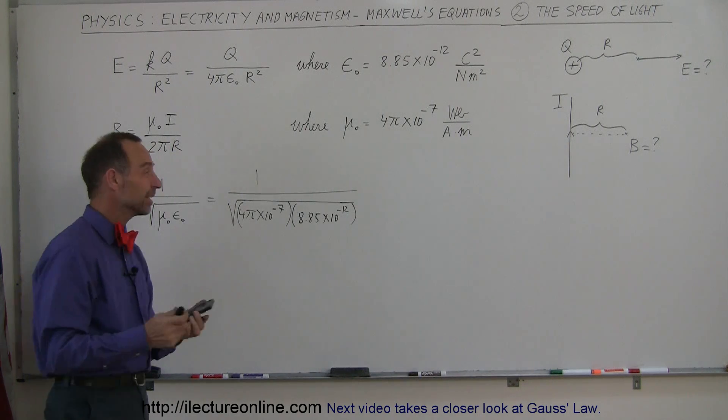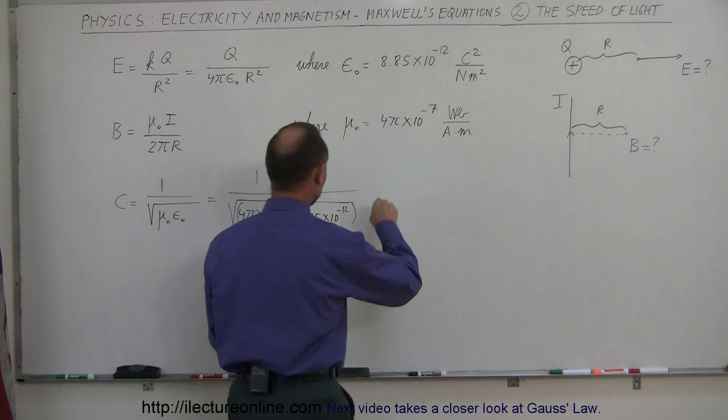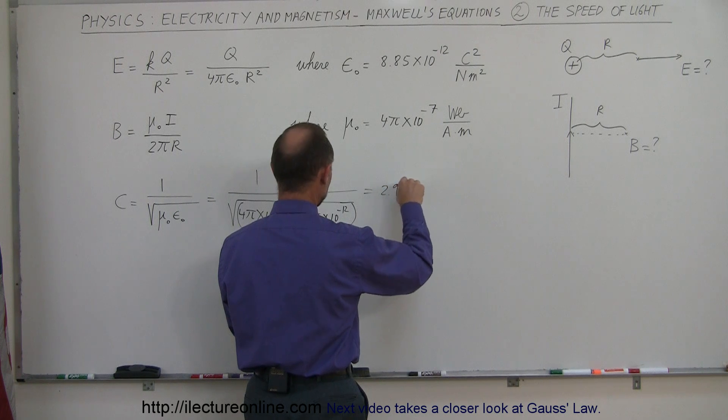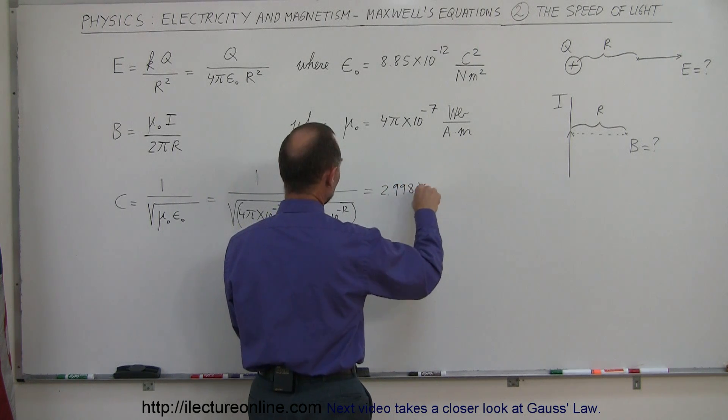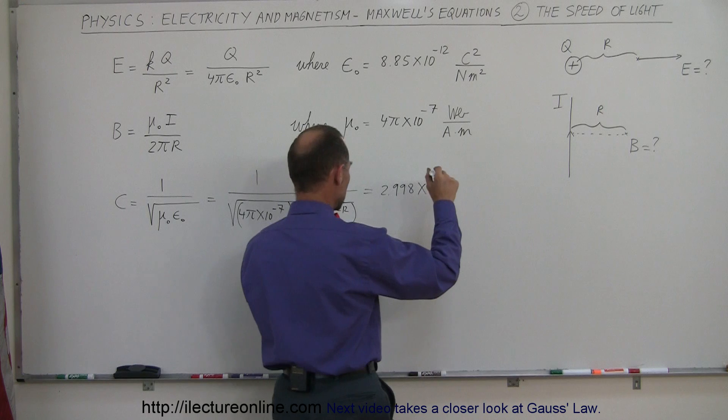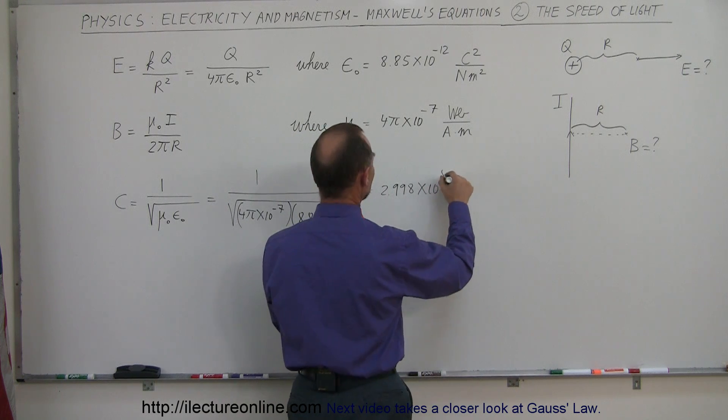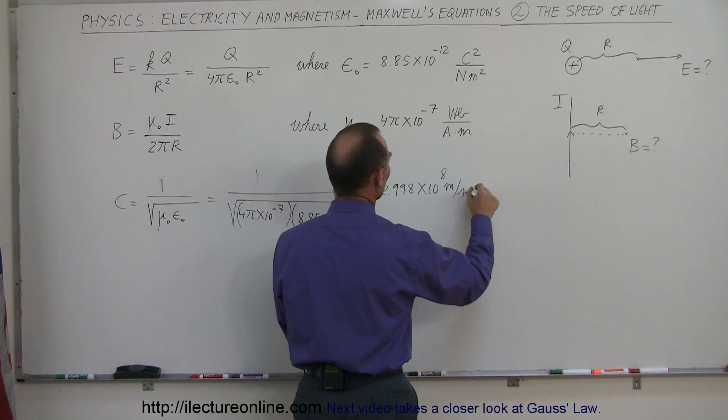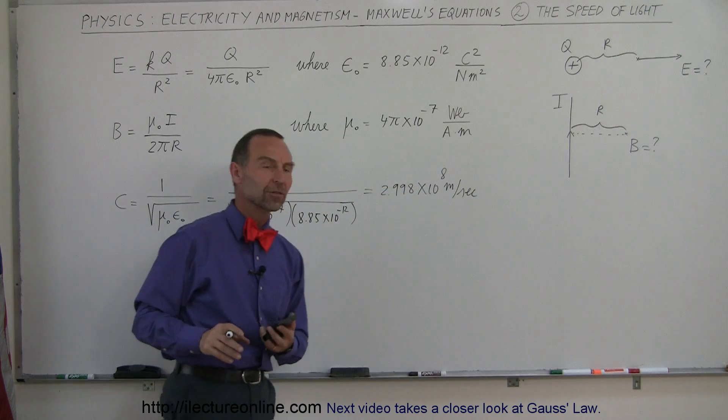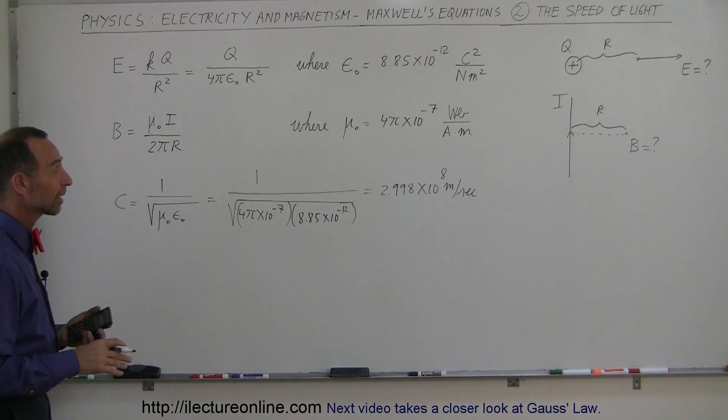There it is. Amazingly enough, it tells us that this is exactly 2.998 times 10 to the 8 meters per second, which is right around 300,000 kilometers per second, or 186,000 miles per second.